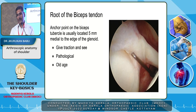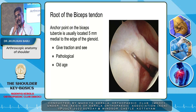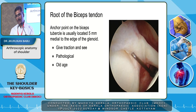Coming to the root of the biceps tendon — the anchor point is usually located 5 millimeters medial to the edge of the glenoid. Here also, you apply traction and see whether there is any pathological detachment. Normally, the root is firmly attached to the supraglenoid area. But as age advances, there may be some loosening, and that should not be confused with a pathological change.